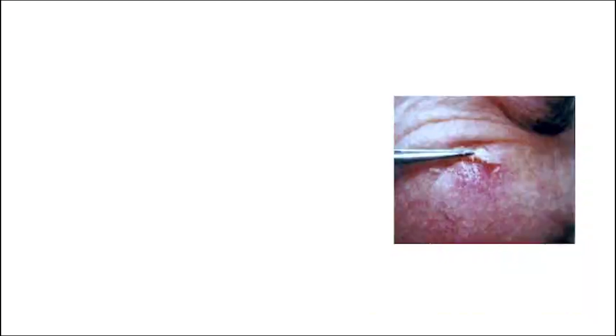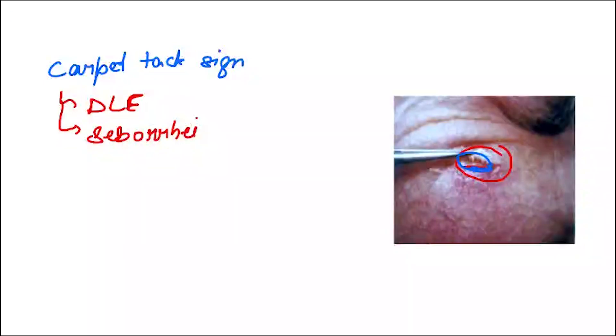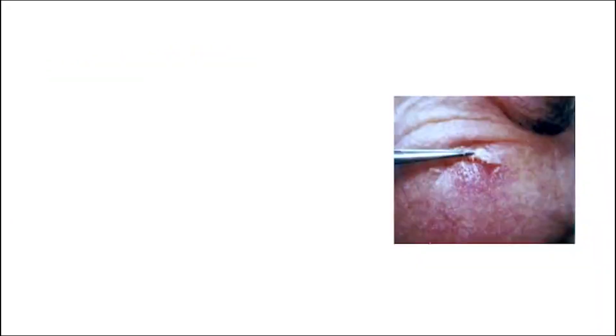This is carpet tack sign. When you remove a scale, you can see these horny plugs. This is carpet tack sign. It is seen in, very importantly, DLE - discoid lupus erythematosus. Also, seborrheic dermatitis.